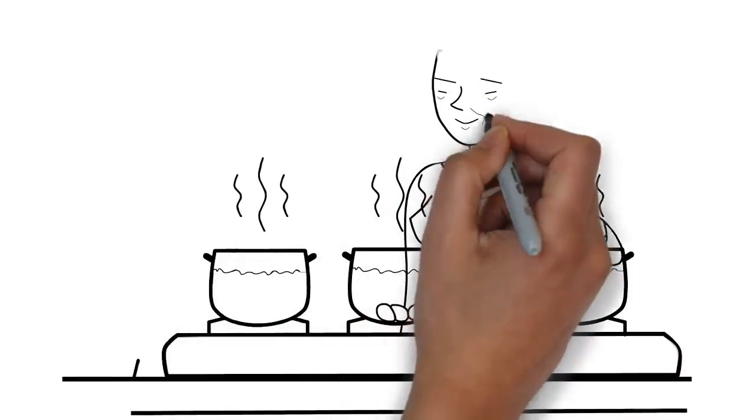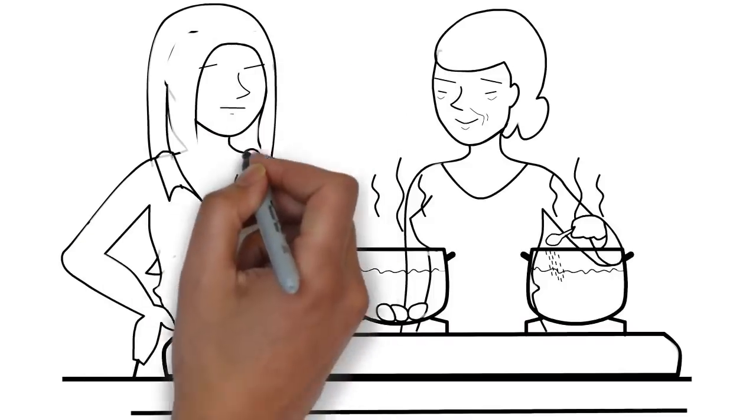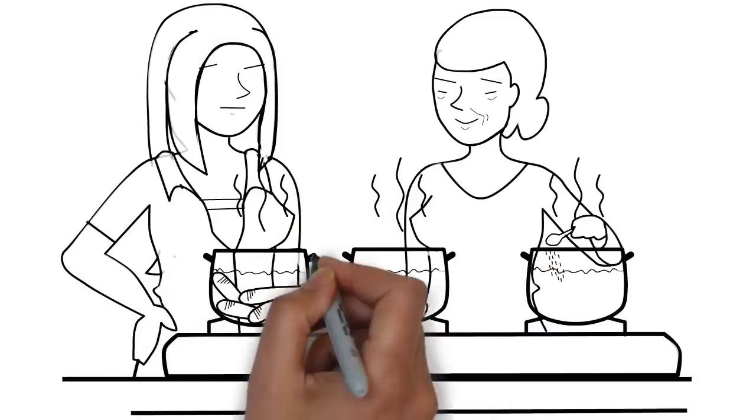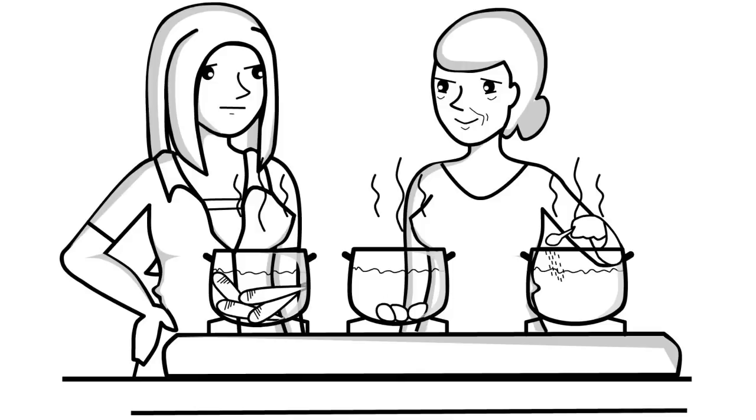In the first pot she placed carrots, in the second she placed eggs, and in the last she placed ground coffee beans.